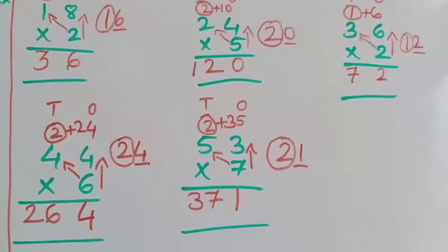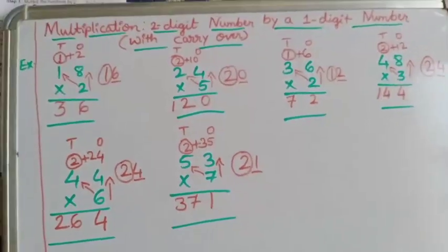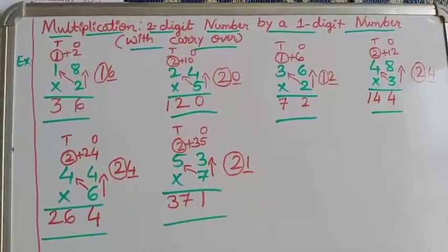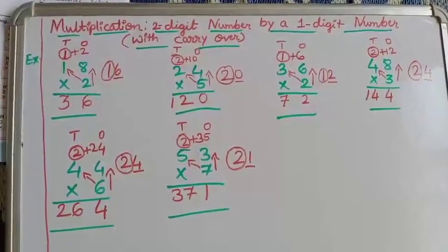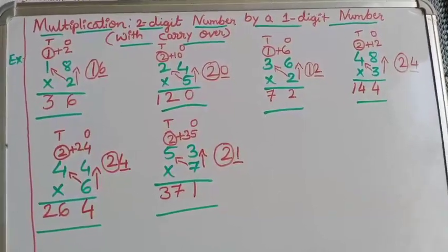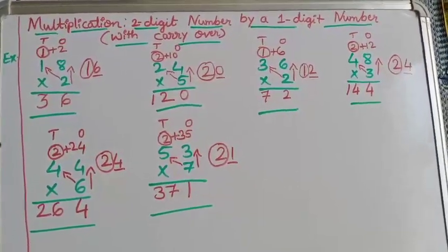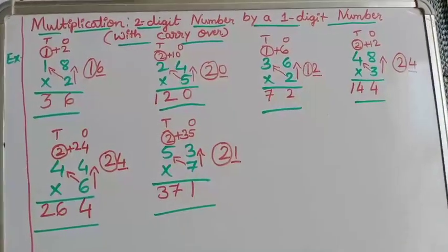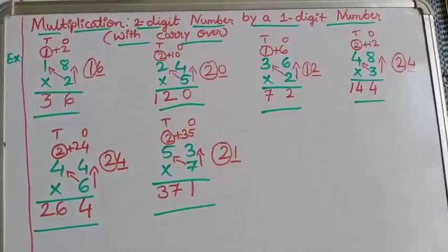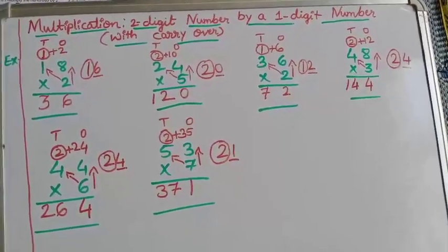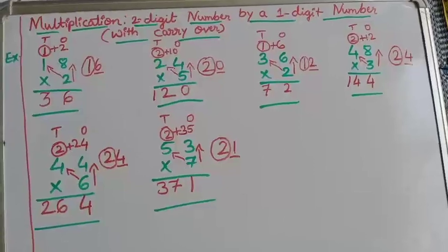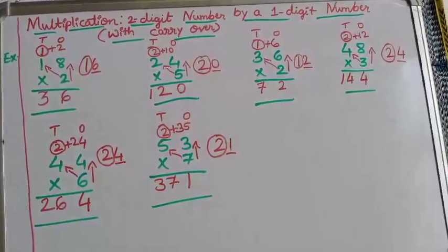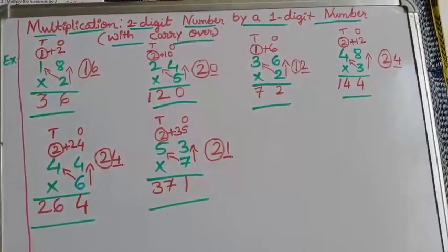So here we have completed the examples of multiplication of a two-digit number by a one-digit number with carry over. I hope you all understood the method easily. I have used a very easy method — sit and practice the sums children. And very importantly, I am repeating every time: learn your tables — that is very important. Based on this topic, I am going to give you some homework that you have to solve yourself.